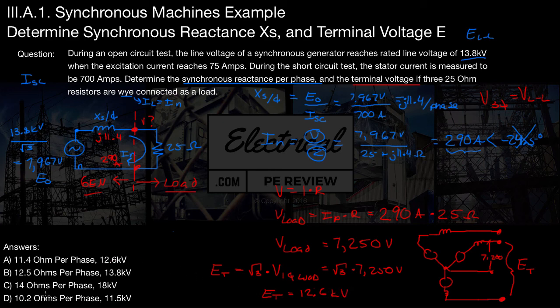So we look over here at our answers, and that means our answer is A. For 11.4 ohms per phase for our synchronous reactance voltage. And 12.6 kV for our terminal voltage, right here. And better represented right here, since this would just be the phase voltage.